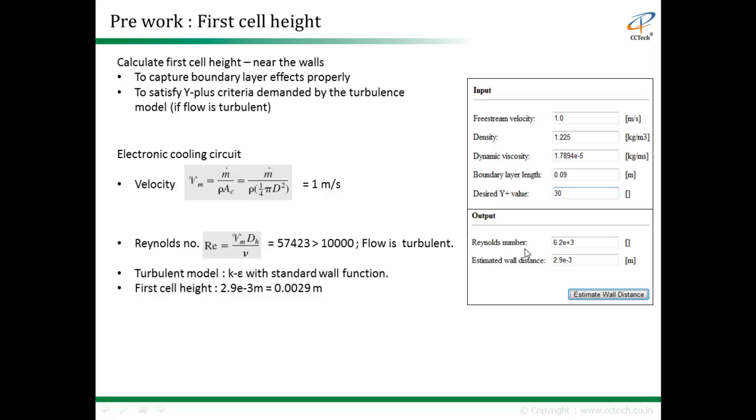After entering all inputs, we get the outputs: Reynolds number and estimated wall distance. We use this wall distance as our first cell height. The first cell attached to the wall will be at a distance of 2.9×10⁻³ meters. Now we will proceed with the mesh parameters.